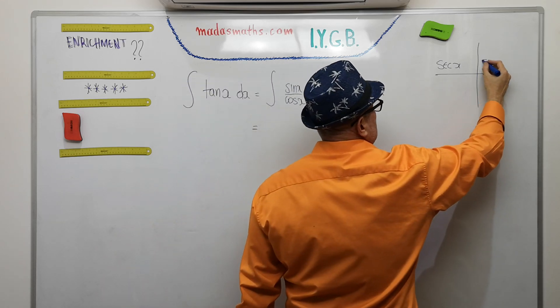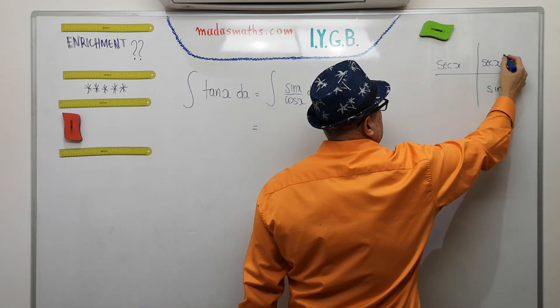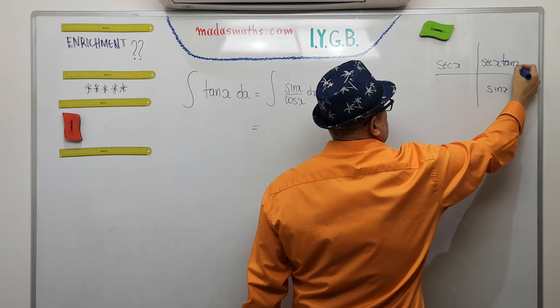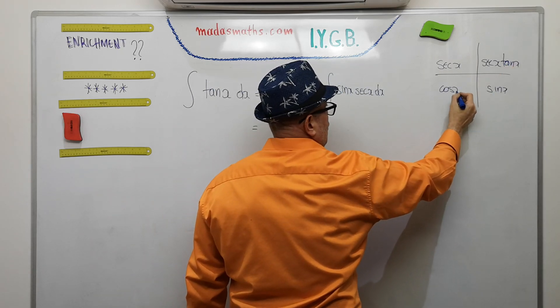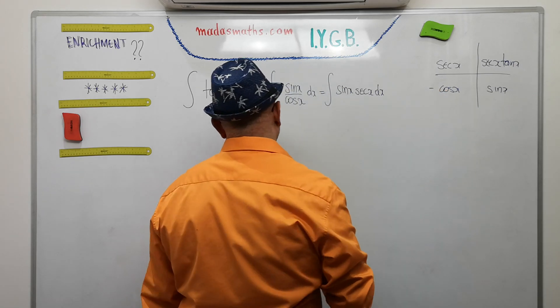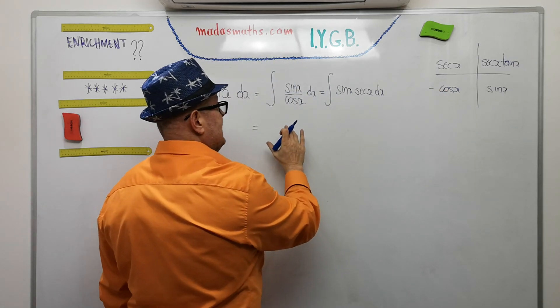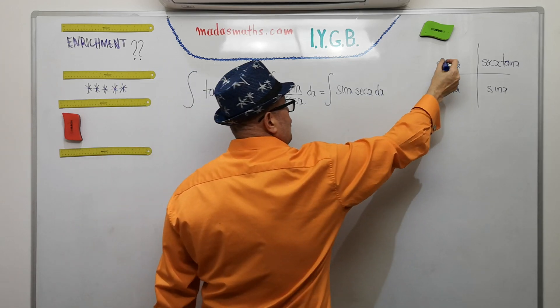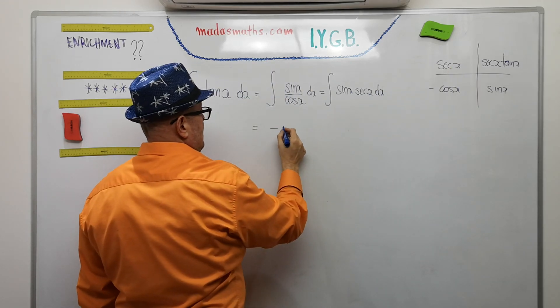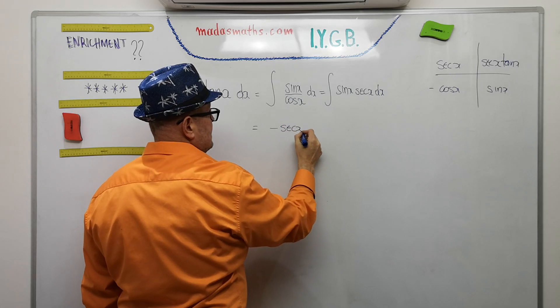So sec differentiates to sec x tan x, and the sine comes from differentiating a cos back with a minus. So the line you should be getting now from there should be the product of this column. So that is going to be minus sec x.